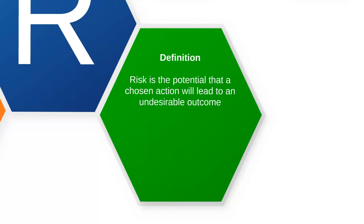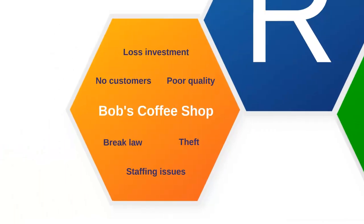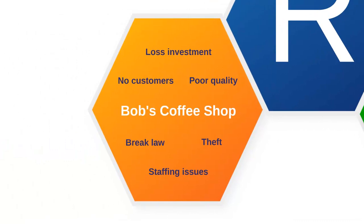This leads us to the definition of risk we'll use primarily through this P3 subject: the potential that a chosen action will lead to an undesirable outcome. The goal is that having identified the risks — like we've done with Bob — we can then start to look at how we go about managing those risks.